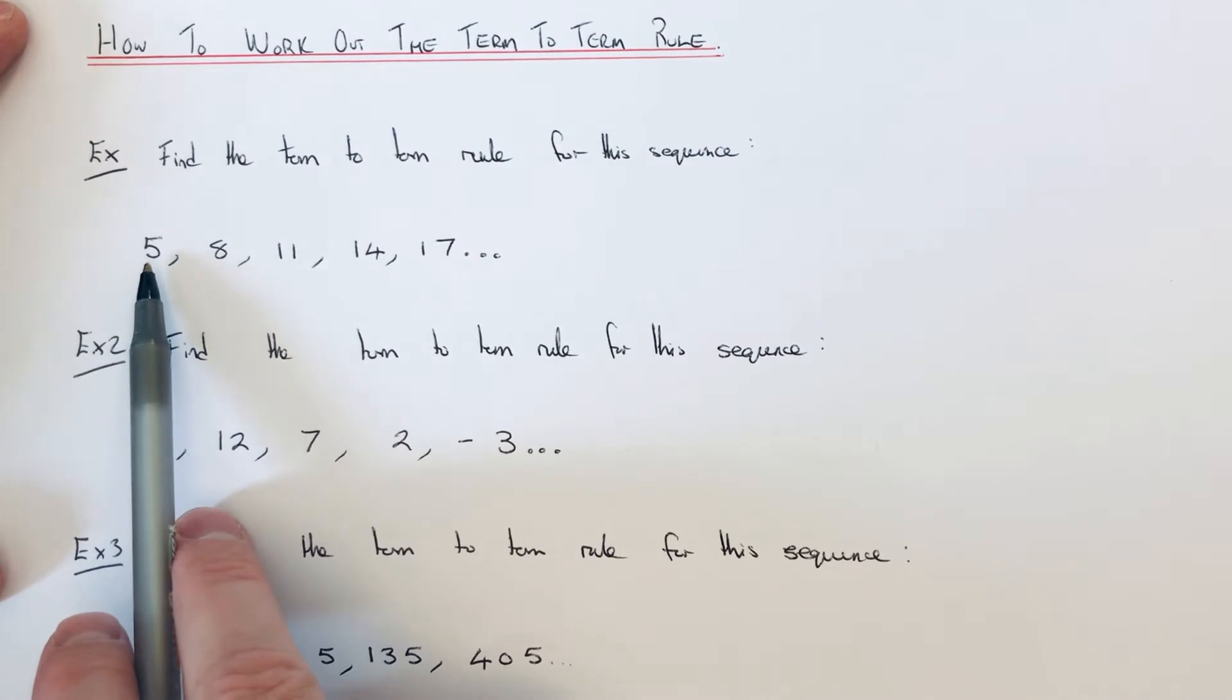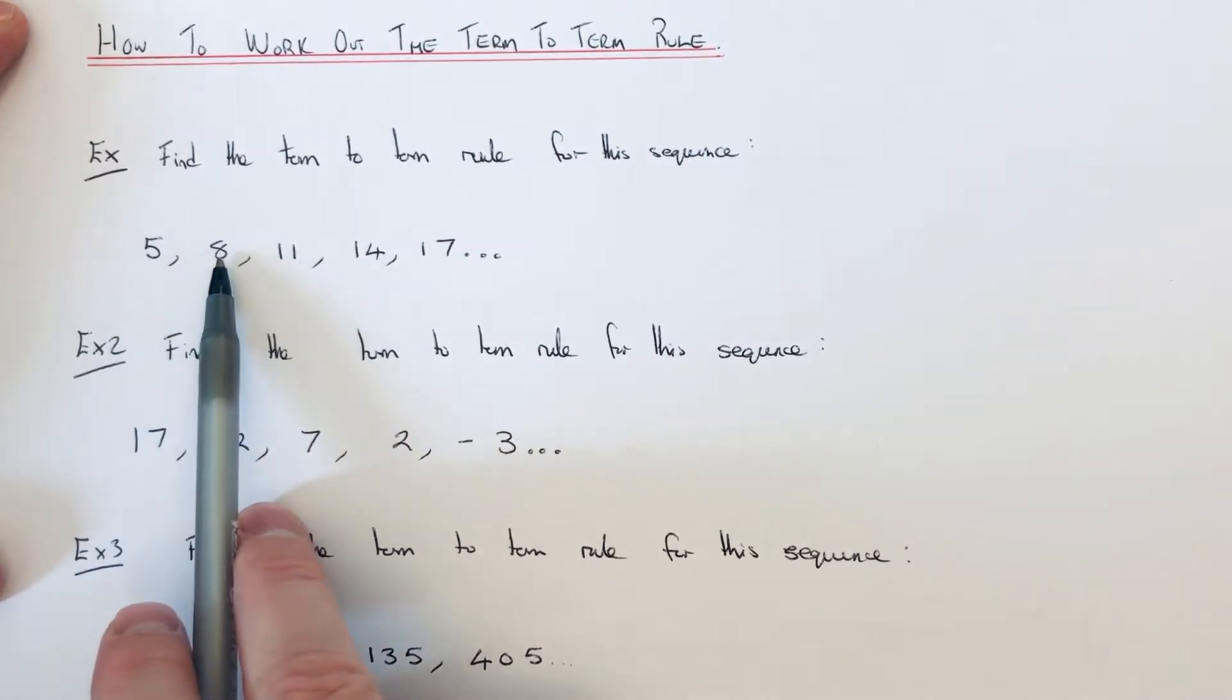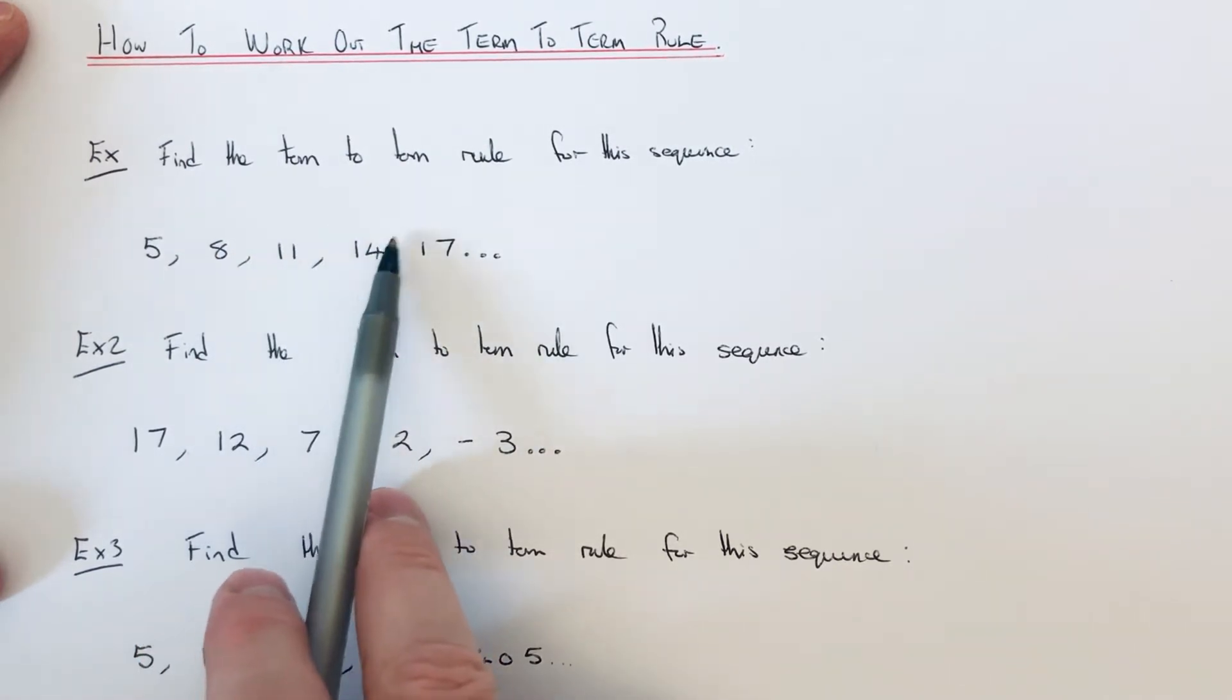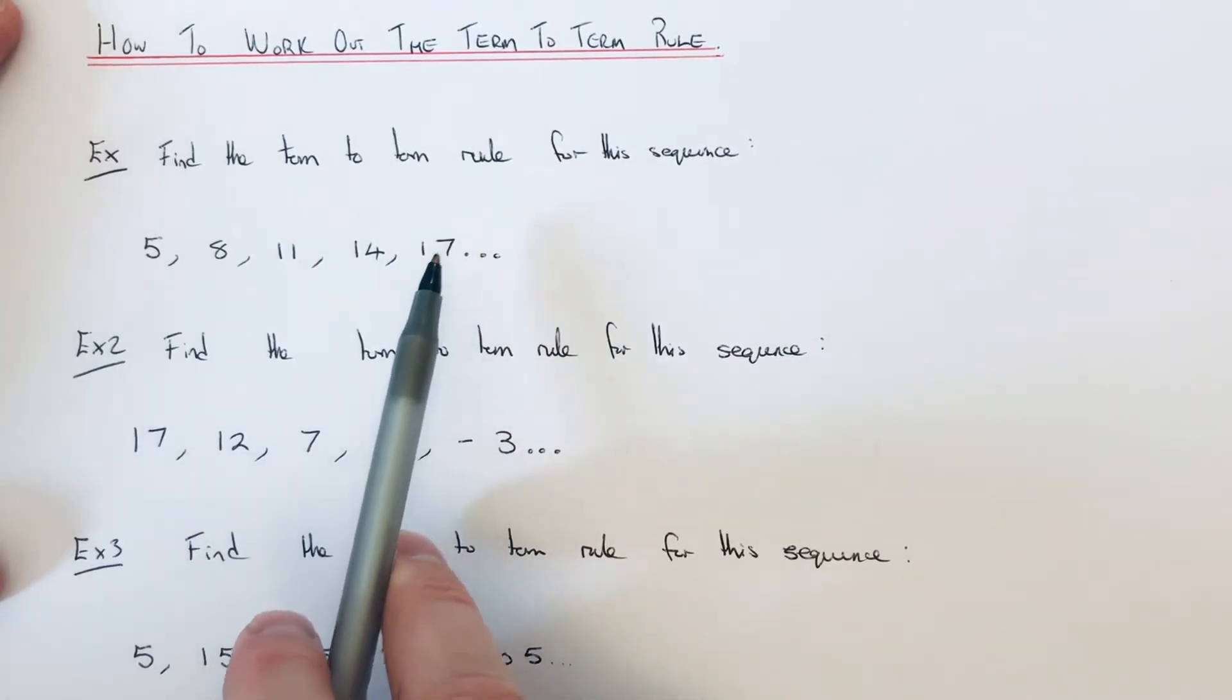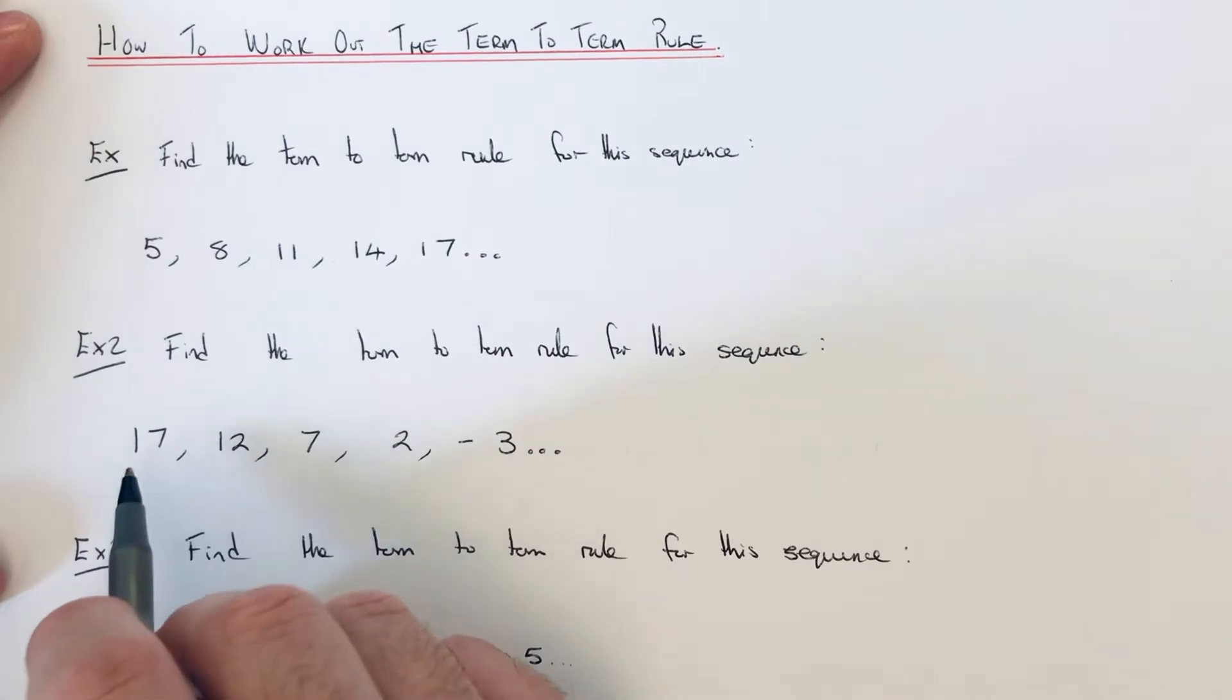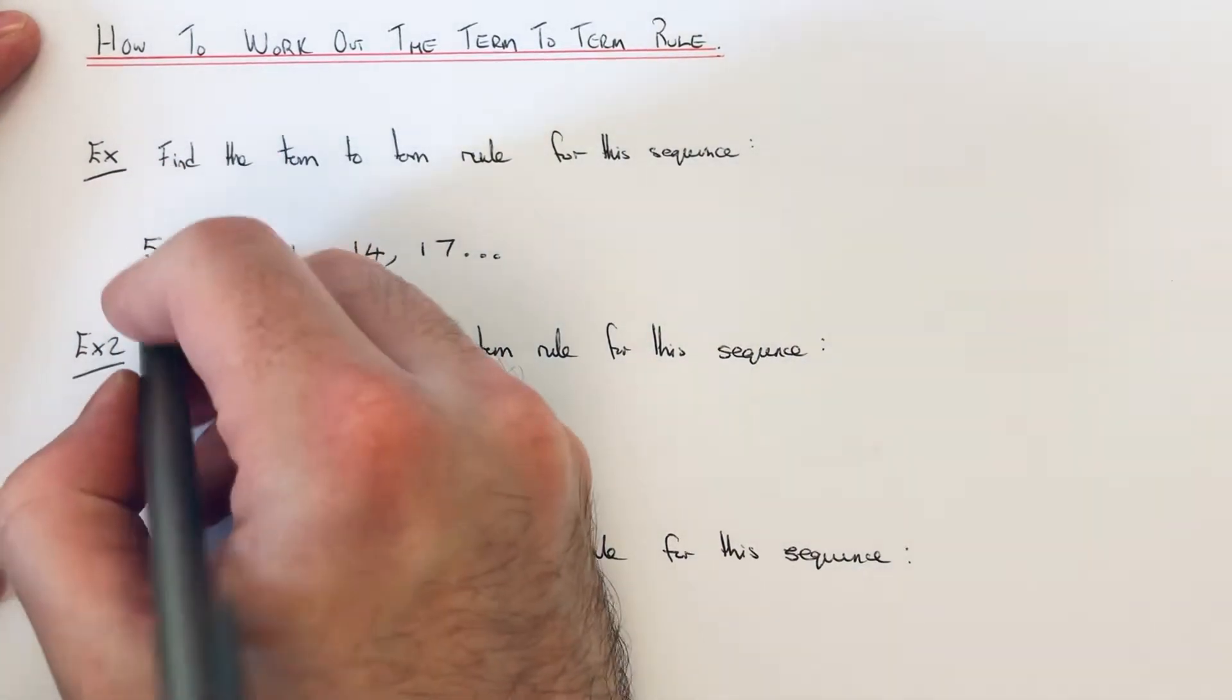Now the term to term rule is what you do to the first number to give you the second number and what you do to the second number to give you the third number, the third to the fourth and the fourth to the fifth. Okay, so this one is an increasing sequence. So it's looking like we're adding something on each time.